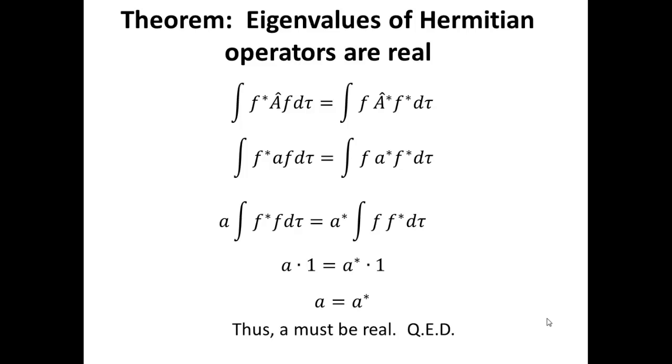The reason why this is an important result to take the time to prove is that in quantum mechanics, we obviously have machinery. We have operators. We have functions that are imaginary. But because we want to connect this machinery to experimental observables, we know the experimental observables are made up entirely of real numbers.